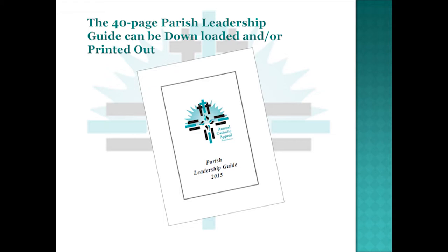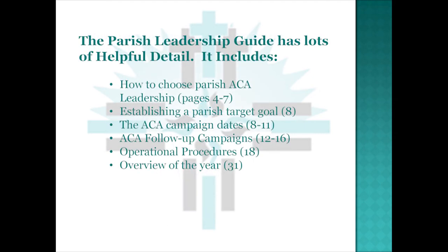The 40-page Parish Leadership Guide can be downloaded and or printed out. It includes how to choose the Parish Annual Catholic Appeal Leadership on pages 4 through 7, How to Establish a Parish Target Goal on page 8, the Annual Catholic Appeal Campaign Dates on pages 8 through 11, the Annual Catholic Appeal Follow-Up Campaigns on pages 12 through 16, Operational Procedures on page 18, and an Overview of the Annual Catholic Appeal Year on page 31.